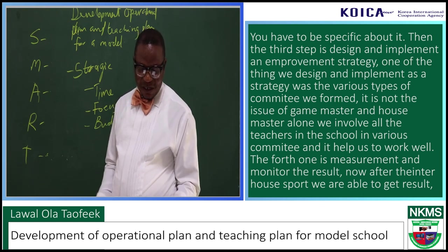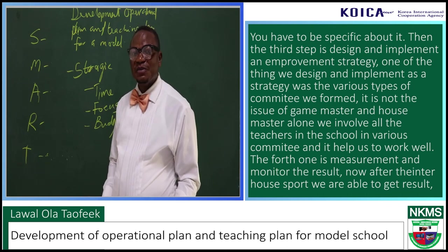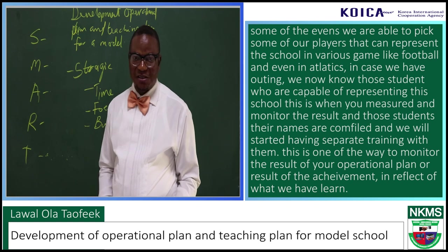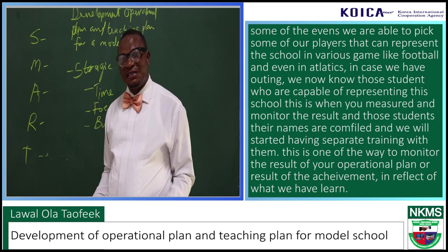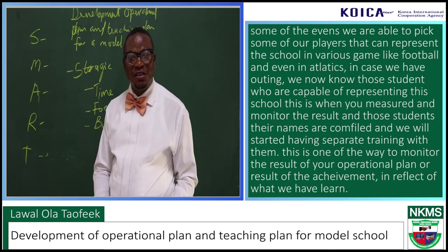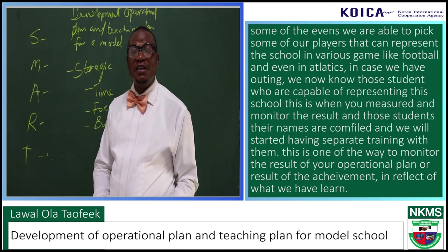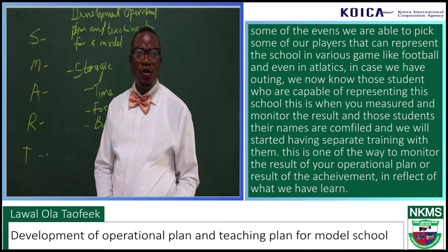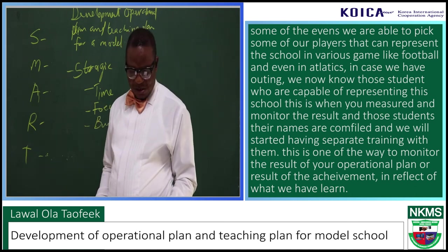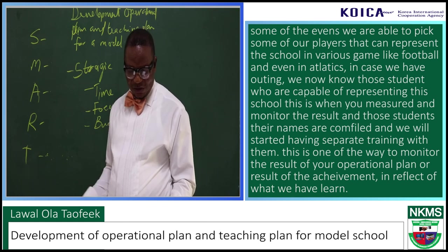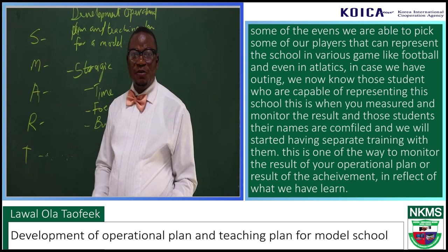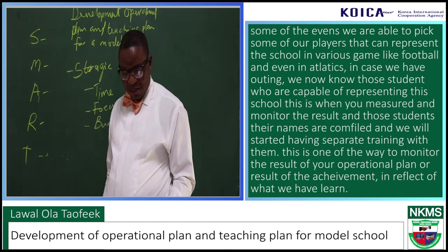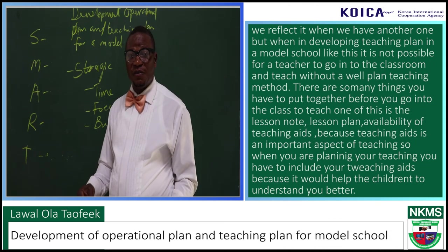The fourth step is to measure and monitor the results. After the inter-sport, we were able to get results. In some events, we picked players who can represent the school in football and athletics in case we have outings — we now know those students capable of representing the school. Their names were compiled and we started having separate training with them. This is one of the ways to monitor the results of your operational plan.